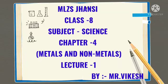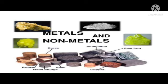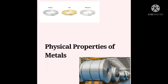Welcome children to the next chapter, that is chapter number 4: Metal and Non-Metal. In this chapter we are going to discuss physical as well as chemical properties of metals and non-metals. First of all, we are going to discuss physical properties of metals.